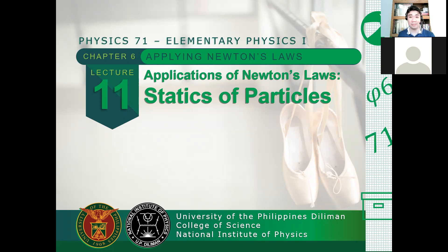Third, we discussed Newton's third law, which is basically how forces act between two objects. Remember, forces are interactions. We have FAB is just equal to negative FBA. That is the force exerted by one body onto the other, which is the action force, is just the negative of the force exerted by that other body towards the first body, which is the reaction force. They act with the same magnitude but in opposite directions.